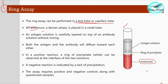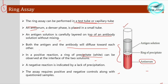Now an antigen solution — for example, a sample containing human antigen — is carefully layered on top of the antibody. We do not mix these two; they will diffuse toward each other on their own if they are reacting. Both the antigen and antibody diffuse toward each other, and in a positive reaction a ring of precipitate can be seen.